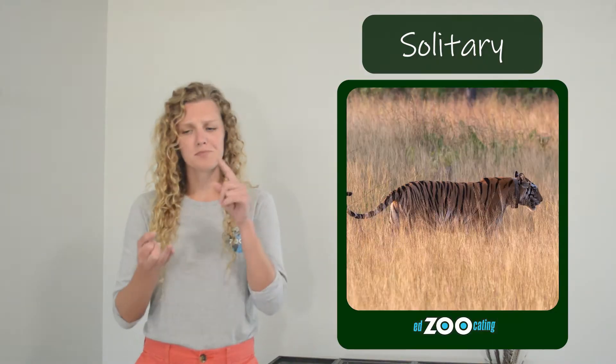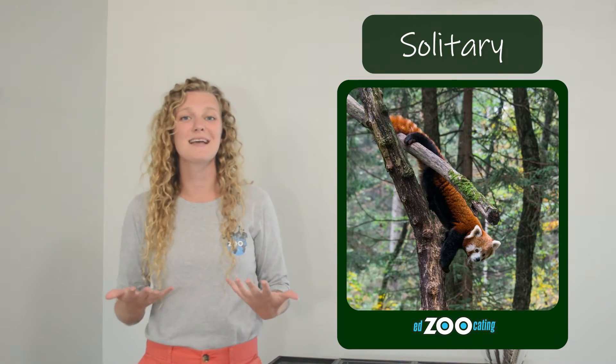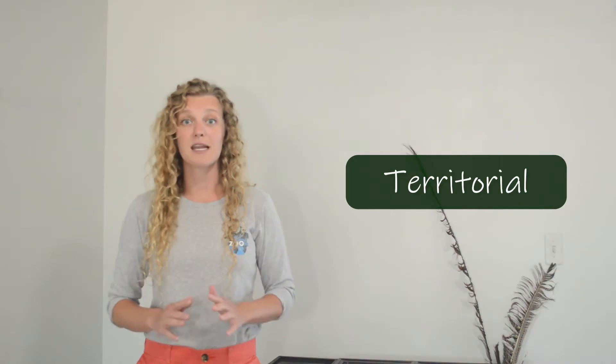Tigers, polar bears, and red pandas are all examples of solitary animals. Many solitary animals are territorial, meaning they don't like to have others in their space. They might mark their territory or even fight with others to keep them out.